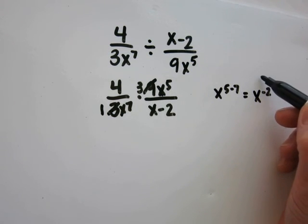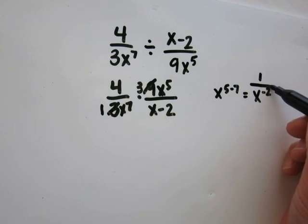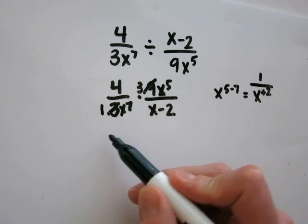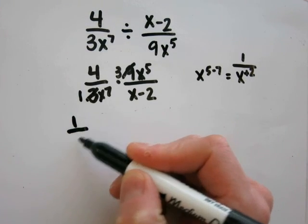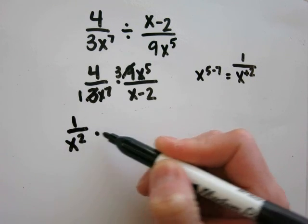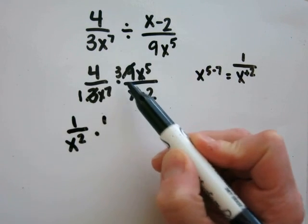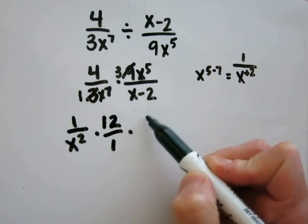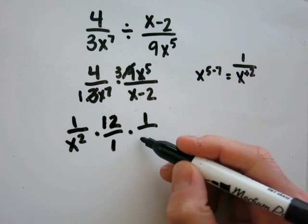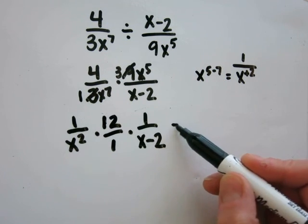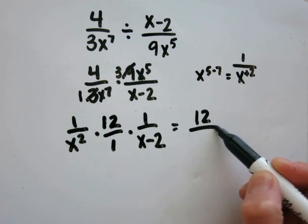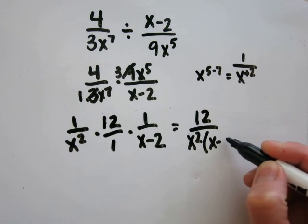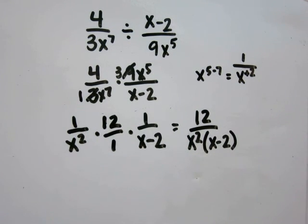When you have a negative power, it's the same as 1 over the power to make it positive. So we'll take this 1 over x squared, times 4 times 3, which is 12, times 1 over. All this can be rewritten as 12 over x squared times x minus 2.